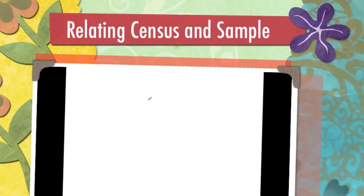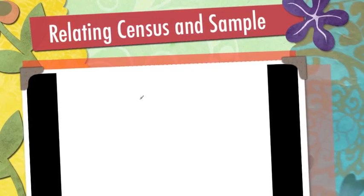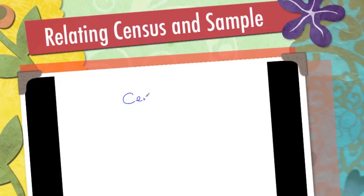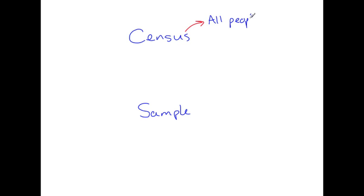In this lesson, we are going to examine two ways to collect survey data: from a census and from a sample. When you collect data by surveying all the people in a population, you are conducting a census survey. Census involves all people in a population.